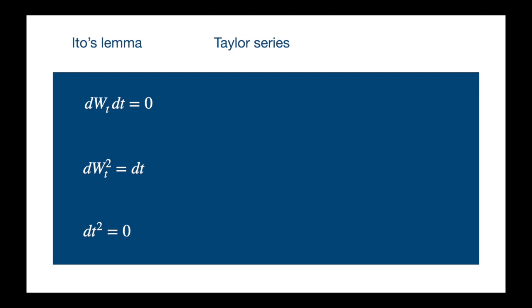So let's see, in what sense is dW times dt equal to 0. The other two will follow the same logic, so I am not going to repeat the explanation for each of them.